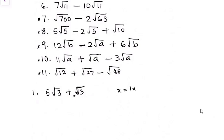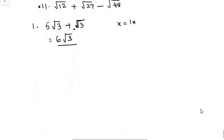So in this case, if we are going to sum them, we're going to say 5 plus 1. That will give us 6√3. That is the first exercise.